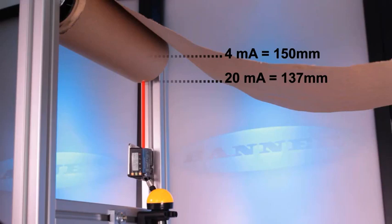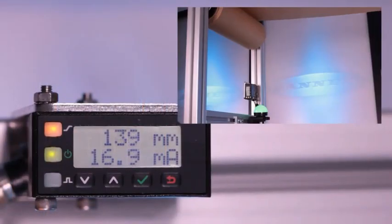The analog output is set from 137 millimeters to 150 millimeters with a negative slope. So as the roll unwinds, the analog output will decrease.